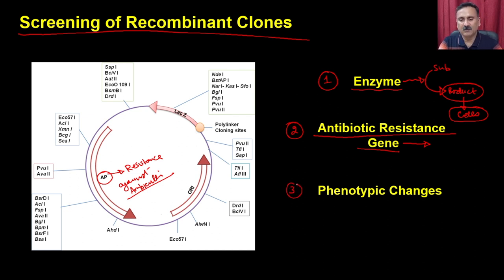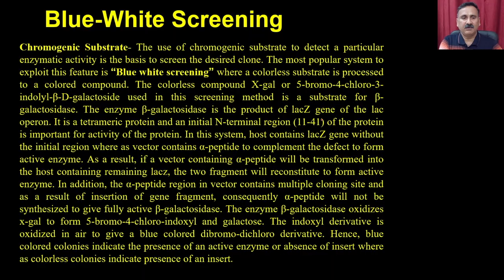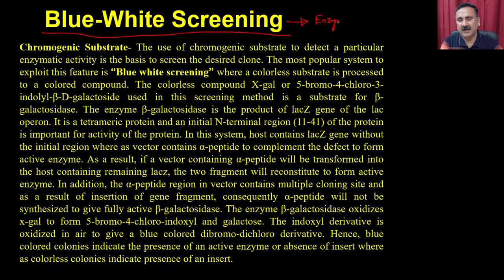The third criterion is the phenotype — where cells that take up the DNA will show some phenotypic changes. So either of these three broader criteria — color, antibiotic resistance, or phenotype — can be used in different screening methods. The first method we will discuss is blue-white screening, where an enzyme converts a substrate into a product that gives a blue color to the cell.